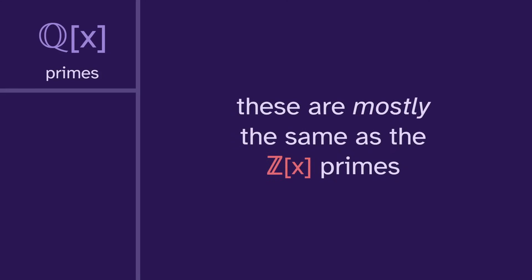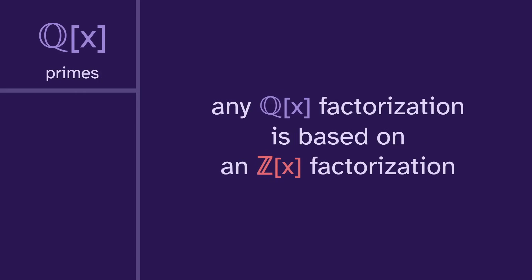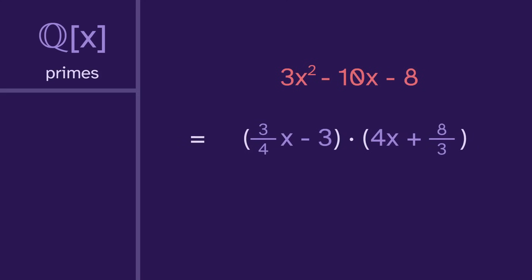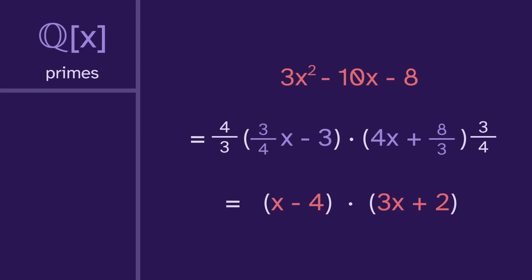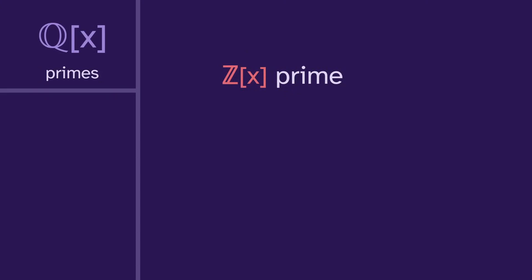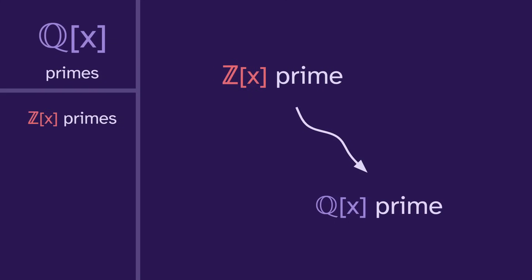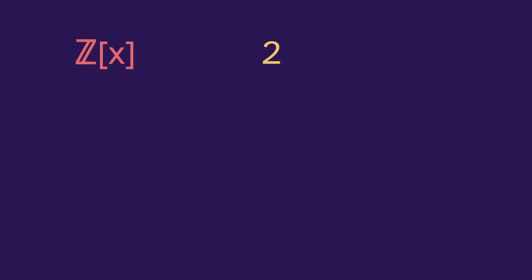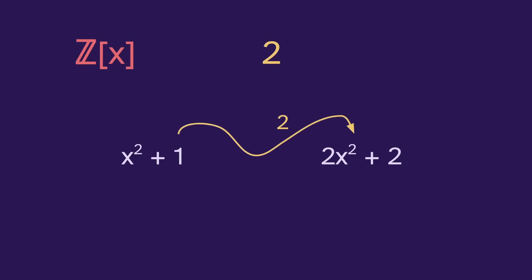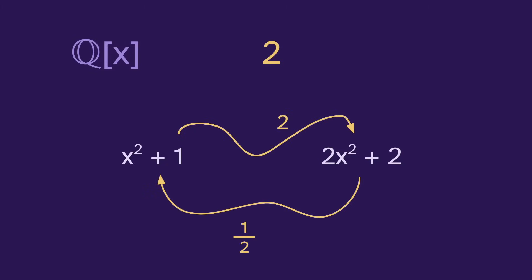The rational polynomial primes are mostly the same as the integer polynomial primes, because any rational factorization is based on an integer factorization. This integer polynomial has a rational factorization, but if we multiply by 4/3 on the left and 3/4 on the right, we just get an integer factorization. The rationals don't give us any new ways to factor. So if we have some integer prime that doesn't have a factorization, it will also be a rational prime. That gives us our first set of primes — the same ones from the integers. But it only works when they're non-constant.